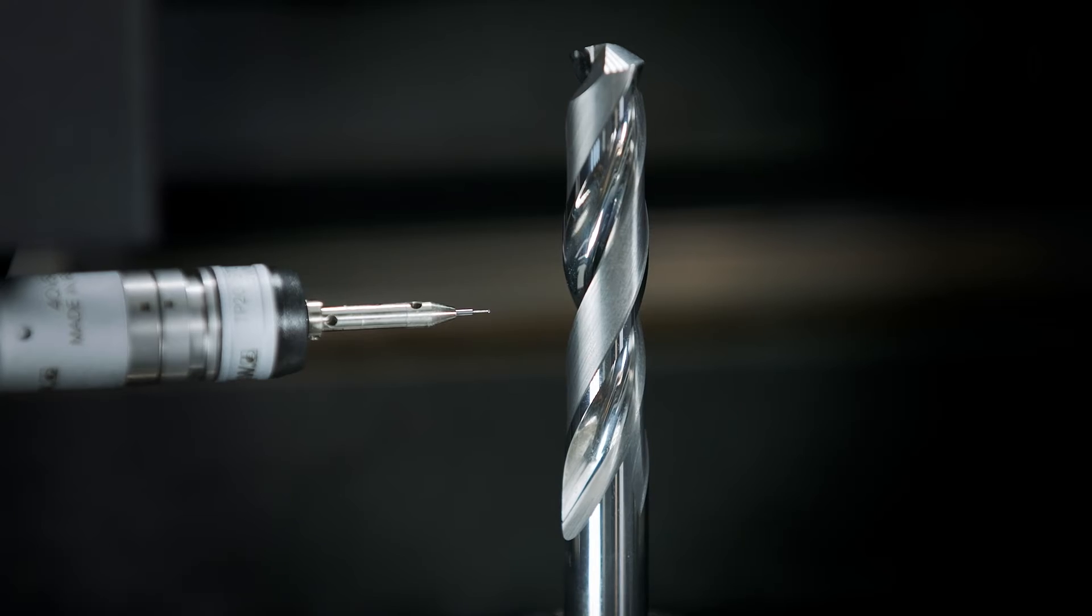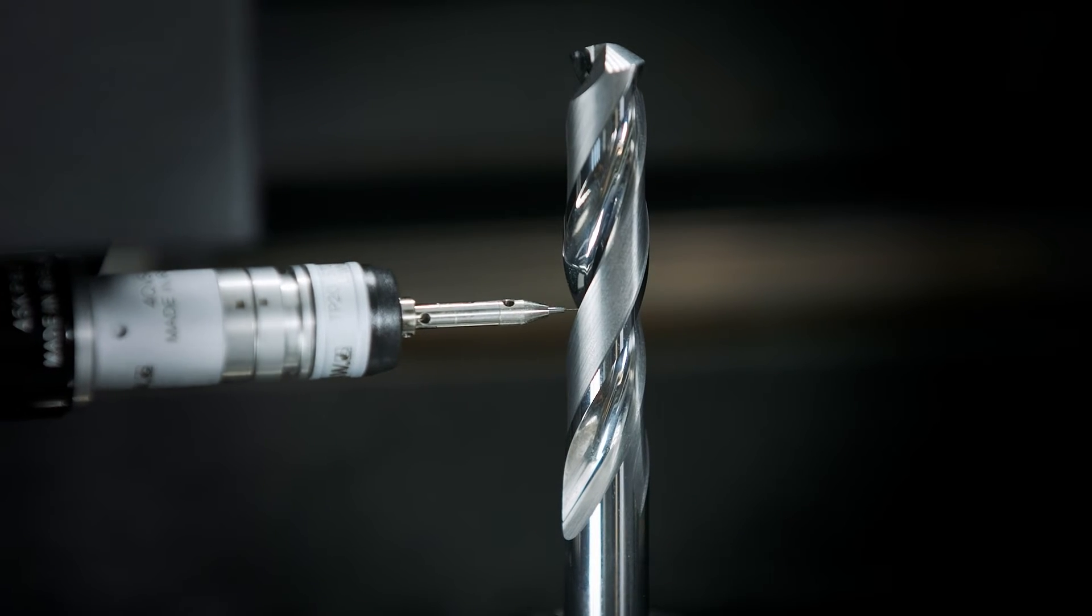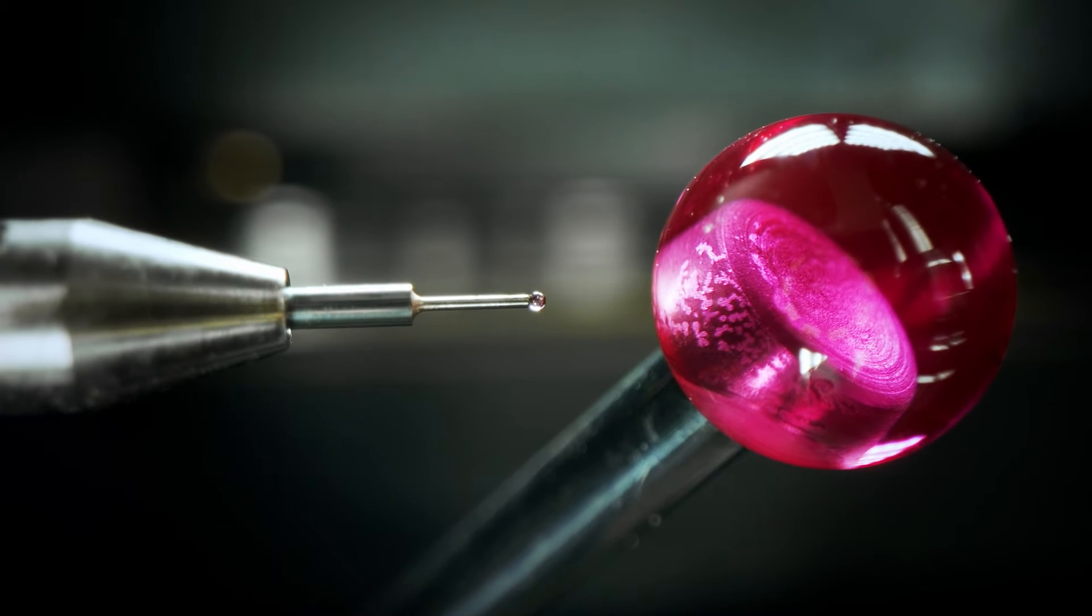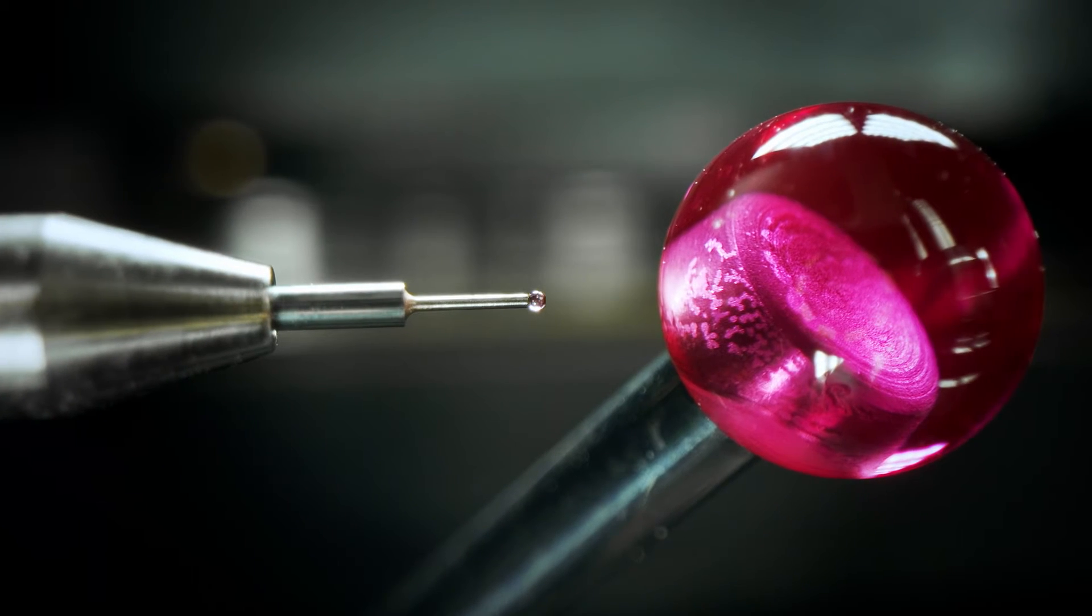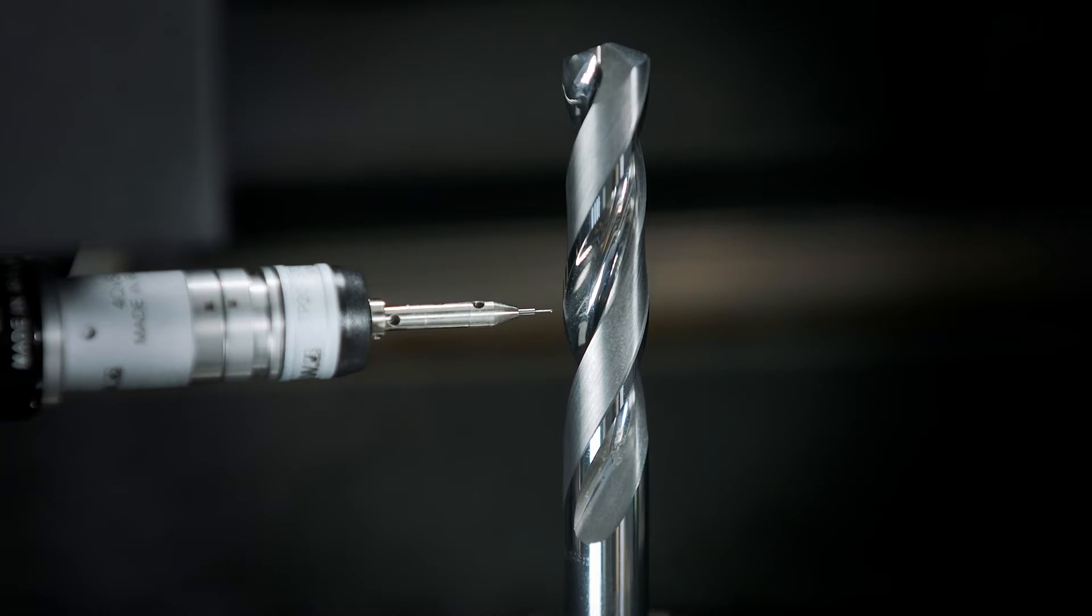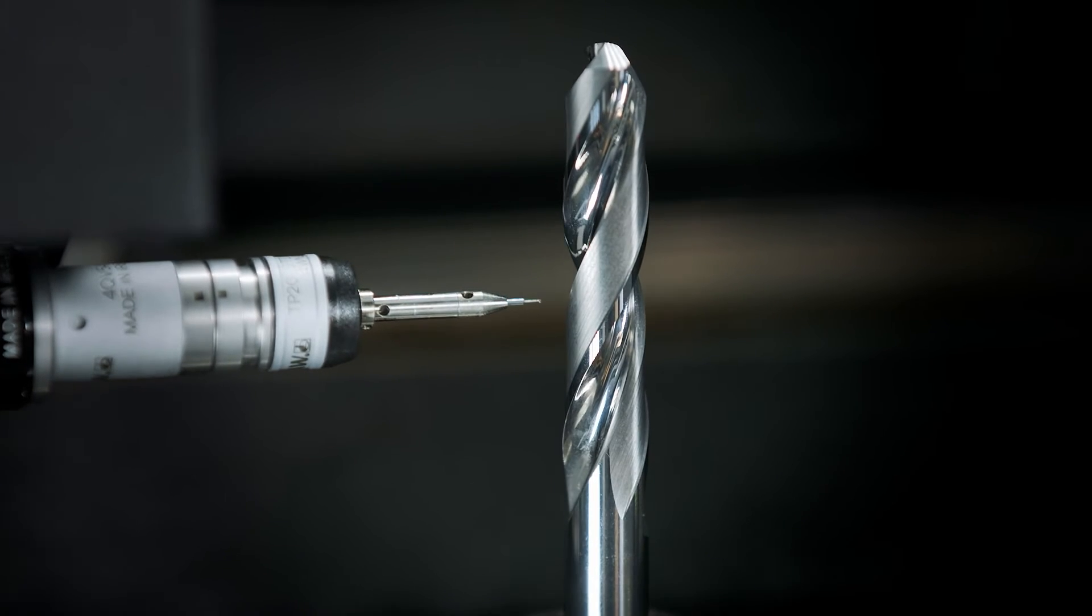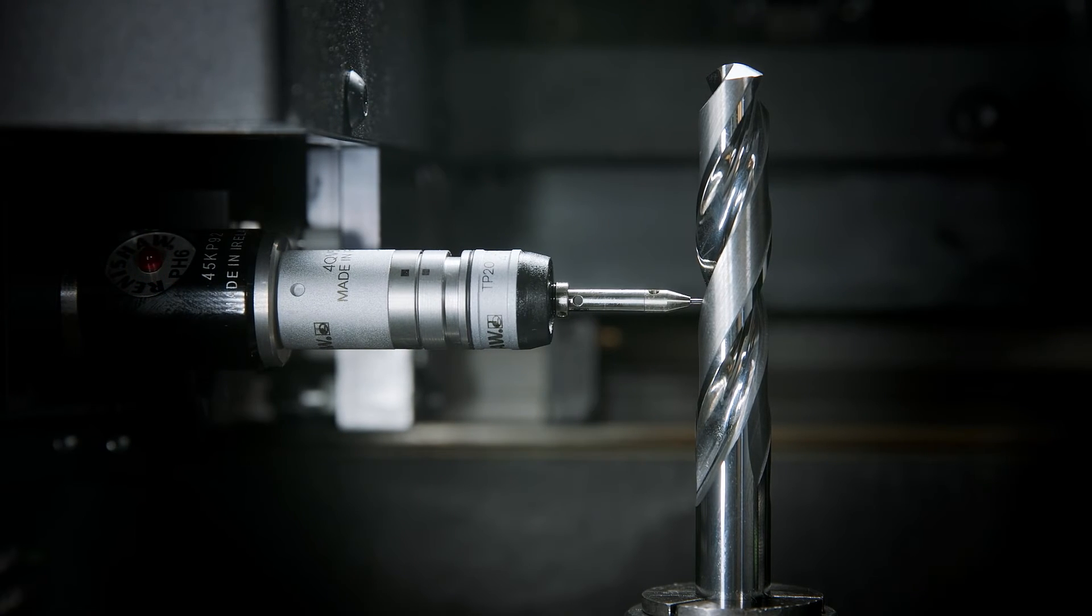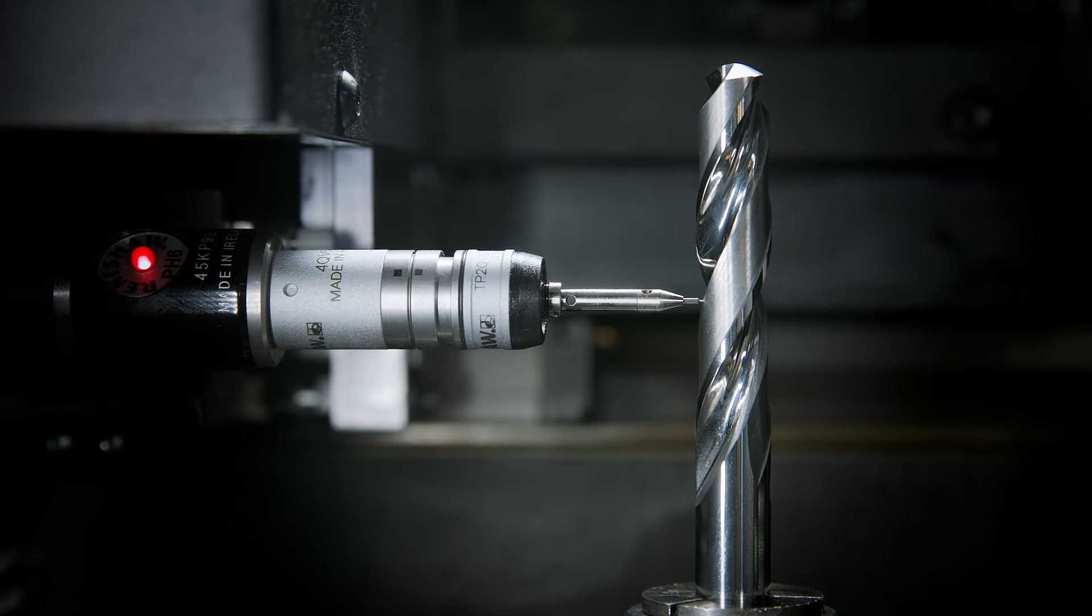This probe is suitable for recording and evaluating absolute measured values, such as rake or clearance angles. The probe we use has a very small ball diameter. As the tool diameter is limited in tactile measurement technology, the diameter of the probe tip is of great importance. Our collision detection system ensures that collisions between the probe and the tool are avoided.